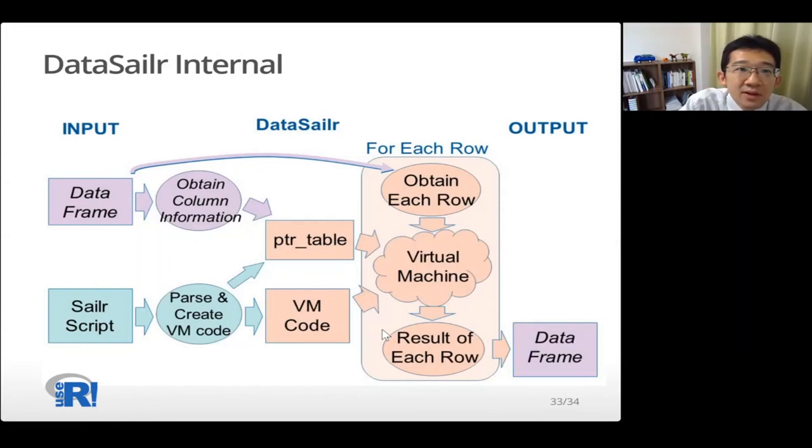I also talk a little bit about Data Sailr internal. Sailr script is passed to virtual machine code. DataFrame is extracted each row. And each row is processed on virtual machine using virtual machine code. And the result is returned. The purple parts, this is the Data Sailr package itself. And the green and orange parts are implemented in the libsailr C or C++ library, which is created especially for this package.